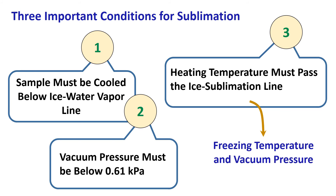If the vacuum pressure is higher — say 0.4 kilopascal — then the minimum temperature required for freeze drying would be higher for sublimation, that is minus 4°C. Please review the phase diagram to understand this point.